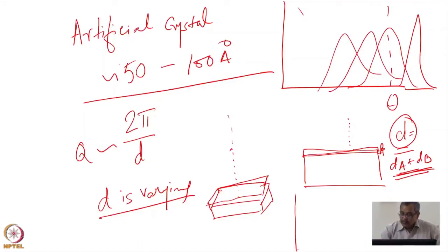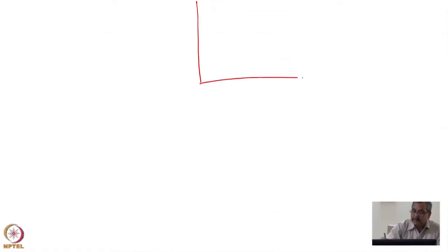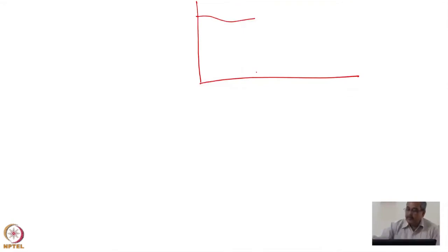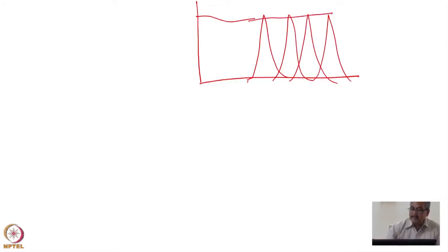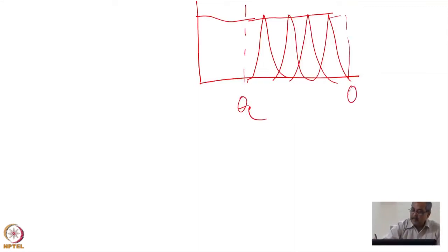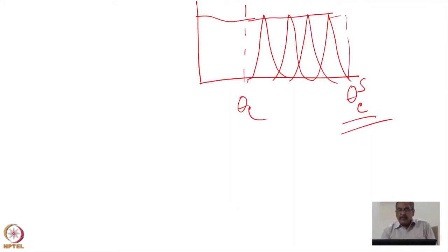The critical angle — up to which reflectivity was 1 and then falling — is now taken over by the Bragg peaks for various D spacings. By this technique I can extend the critical angle to a large value. This is how theta_C for super mirrors is much higher than the theta_C for a single element.